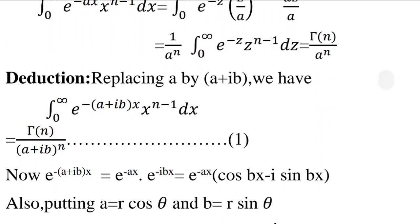Now, e raised to minus of a plus ib into x equals e raised to minus ax into e raised to minus ibx. And e raised to minus ibx equals cos bx minus i sin bx. So the left side becomes e raised to minus ax into cos bx minus i sin bx.